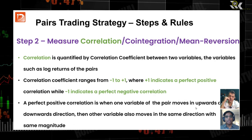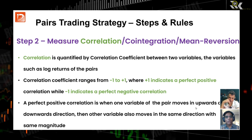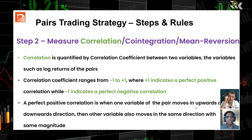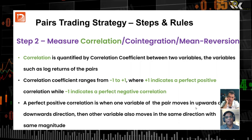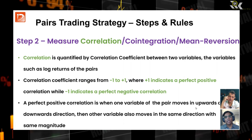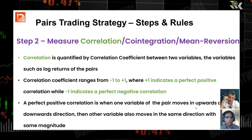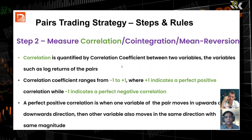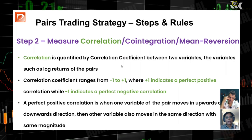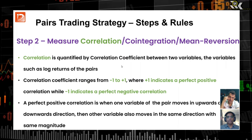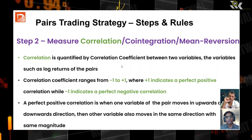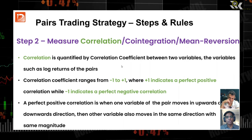Step two is measuring statistical properties. The most common thing people use is correlation — how two pairs are correlated, whether there is high or low correlation. Correlation is quantified by the correlation coefficient between two variables, such as the log returns of the pairs. If you take the log returns of stock A and stock B and look at their correlation coefficient, it measures how they are moving together in terms of returns — same direction and same magnitude means high correlation.